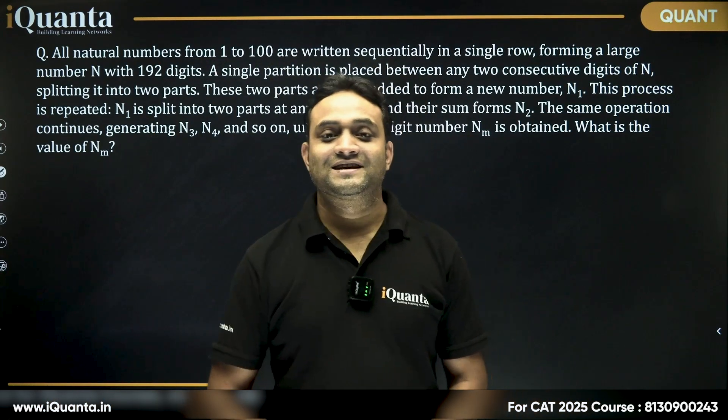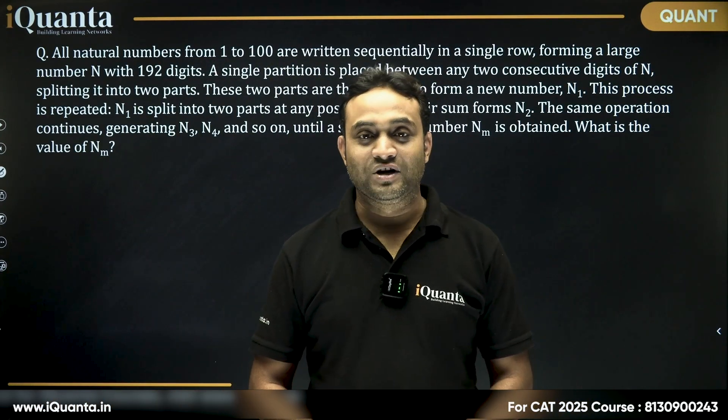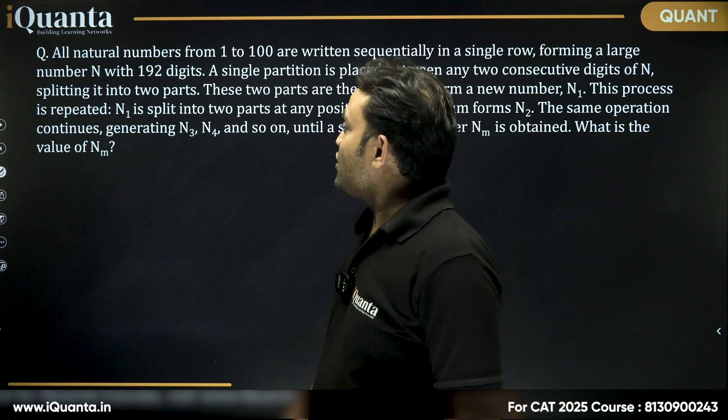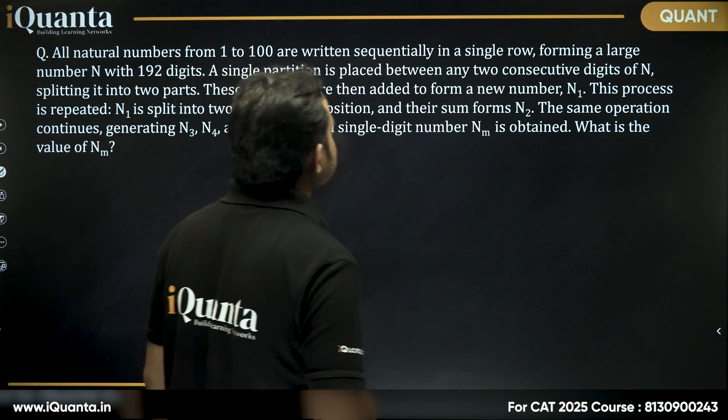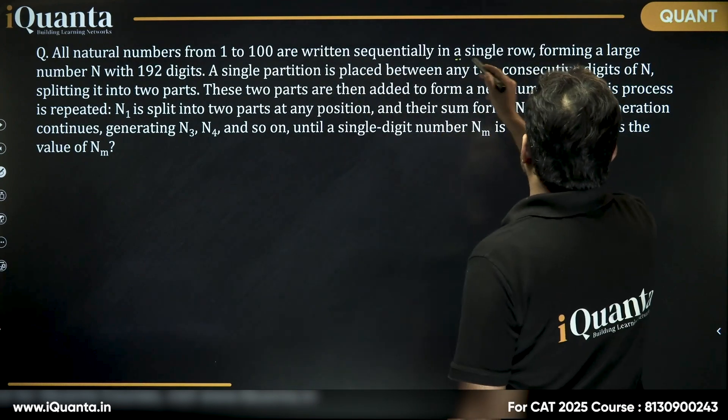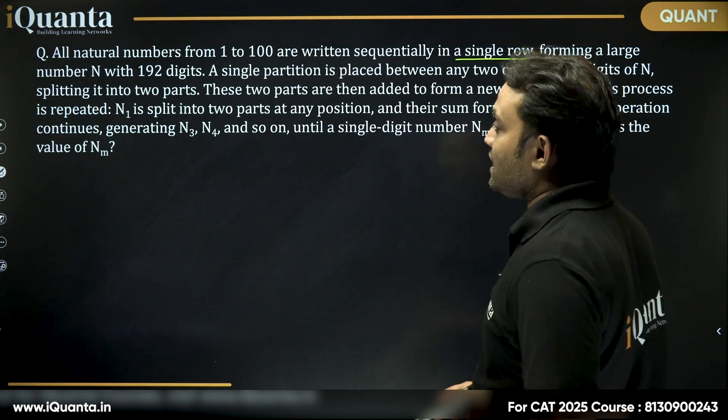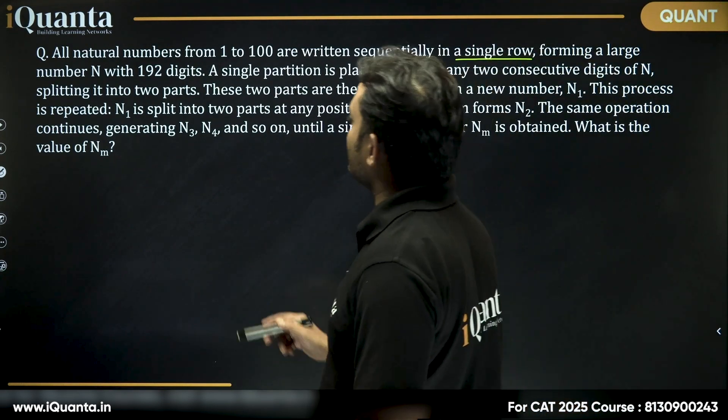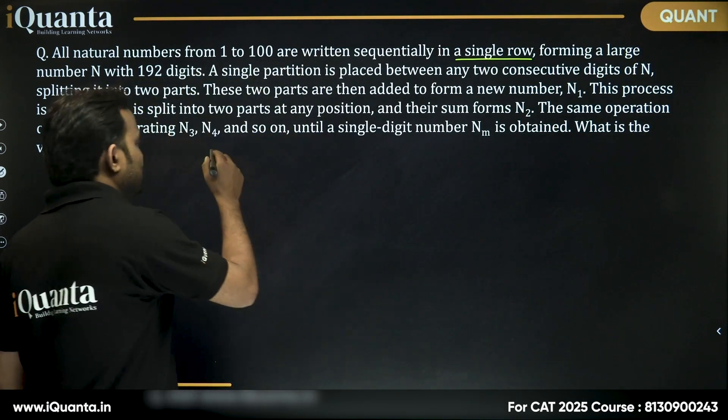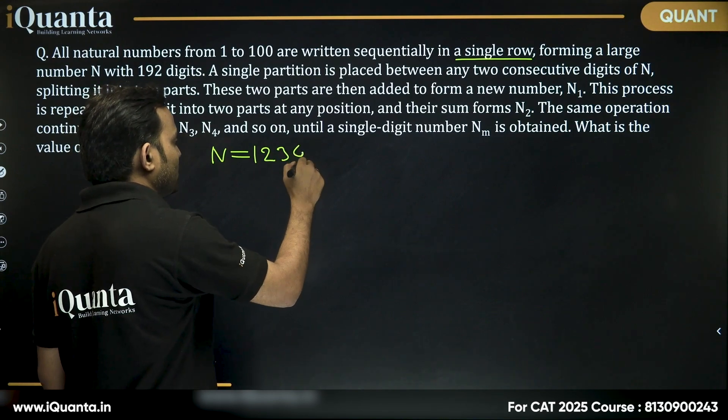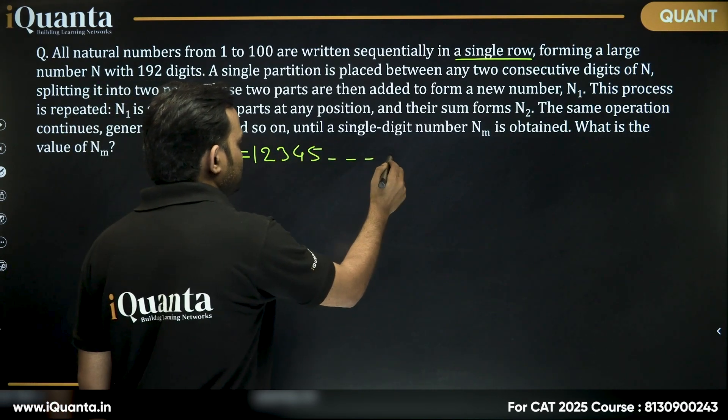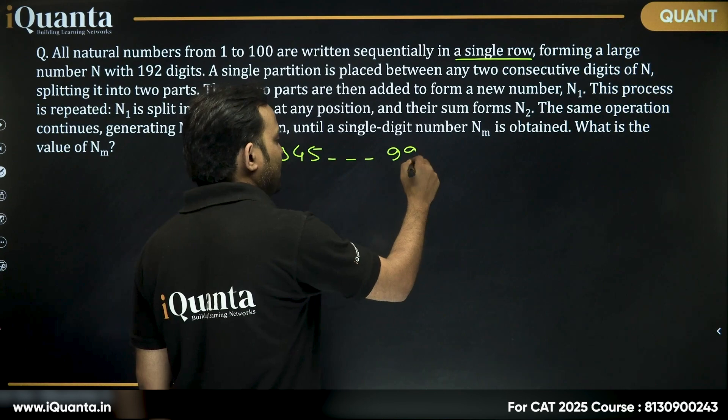Hi, let us discuss another question from Quant 200 series. It says all natural numbers from 1 to 100 are written sequentially in a single row forming a large number n with 192 digits. So basically, n is equal to 1, 2, 3, 4, 5, and so on, 99, 100.